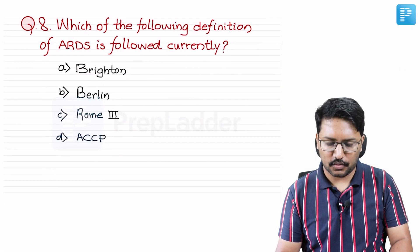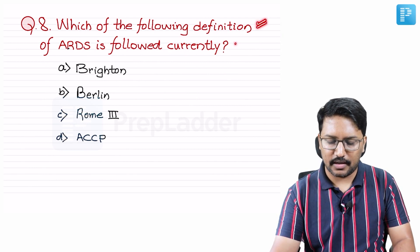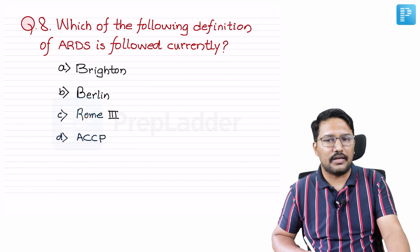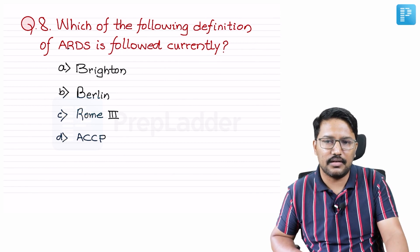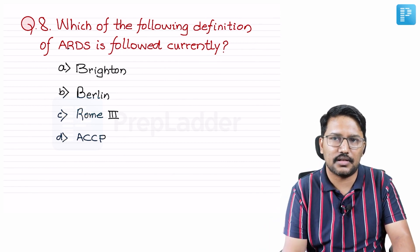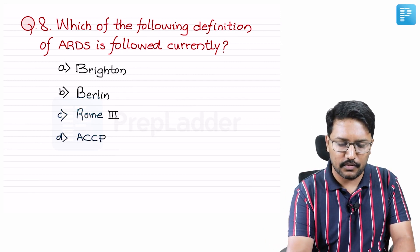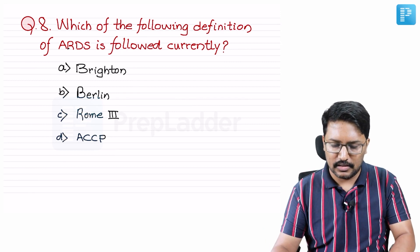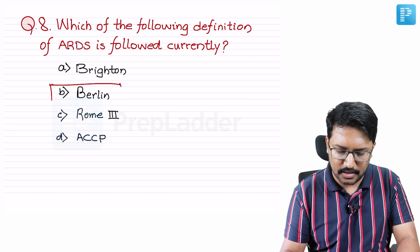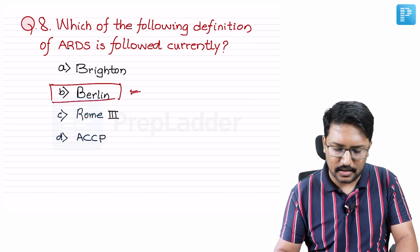Moving on to the next question: which of the following definitions of ARDS is followed currently? The options are Brickton criteria, Berlin criteria, and Rome 3 or American College of Chest Physician criteria. Beyond doubt, we know we are following what is known as the Berlin criteria for diagnosis of ARDS.